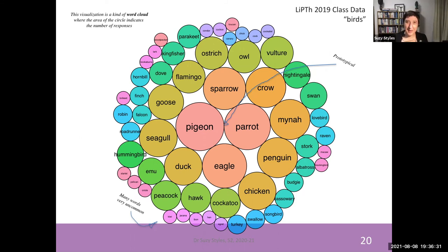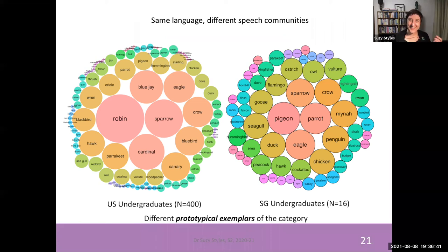Let's now do a comparison of how our class looks compared to those data we saw earlier from Eleanor Rosch's undergrads in the US. And here we can see the difference. We can see that the US undergraduates have different birds at the center of their category compared to Singaporean undergraduates. So there are different prototypes at the core of these categories and different category structures.